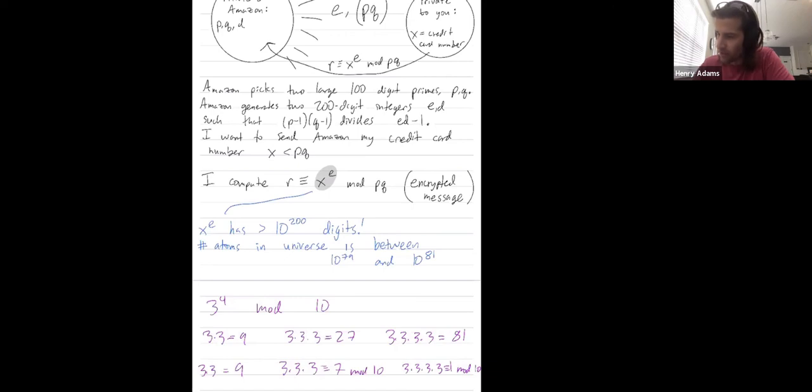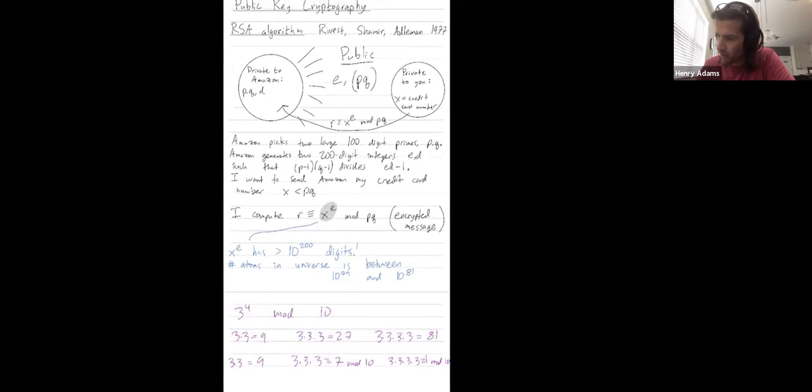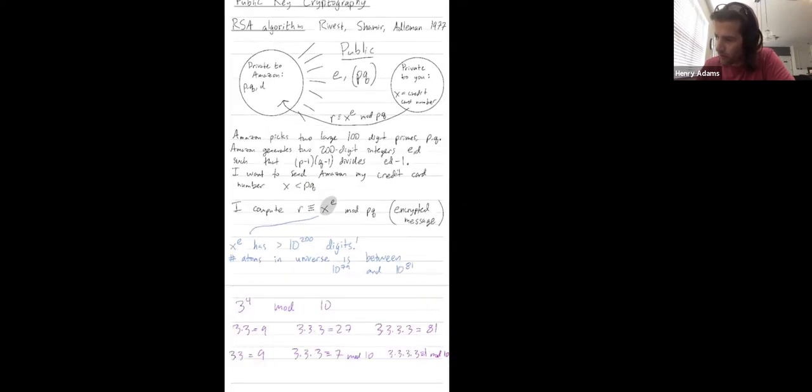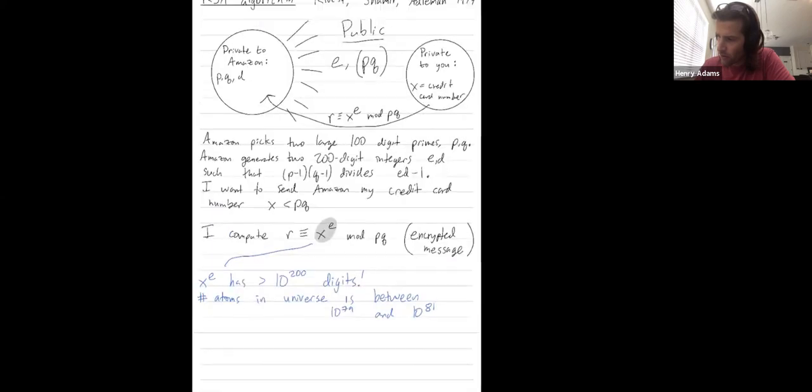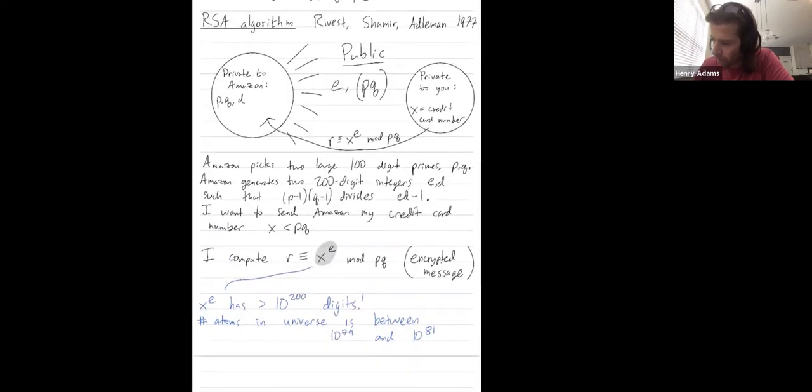Let me tell you what happens next. To conclude, Amazon computes the following. So Amazon has their private key d, and they compute r to the d power mod pq, using the same computational simplifications I just highlighted. And this gives x mod pq by, for now, I'll just say math magic. And we'll explain this a little bit more in the next video.